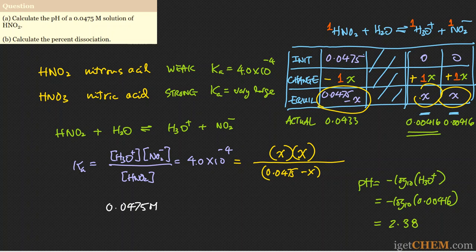Regarding significant figures for pH: the number of digits after the decimal point should reflect the precision of the least precise value in the calculation, which is Ka = 4.0 × 10⁻⁴ (two significant figures). So the correct answer consistent with Ka's precision is pH = 2.38. That is the solution for part A.